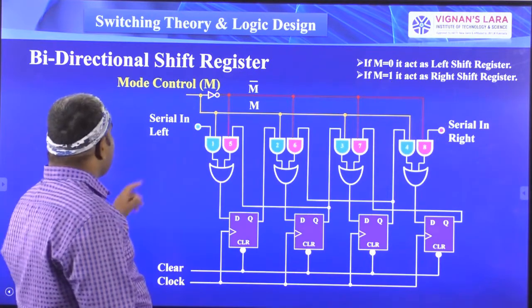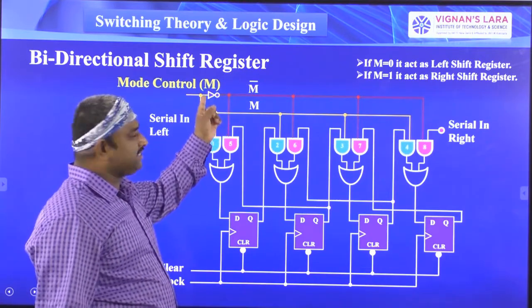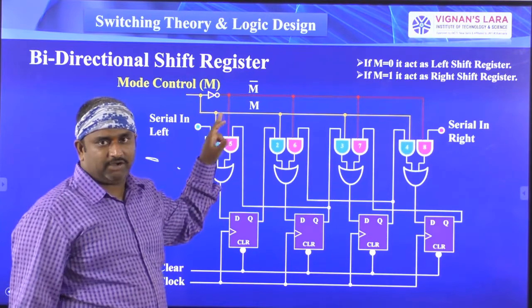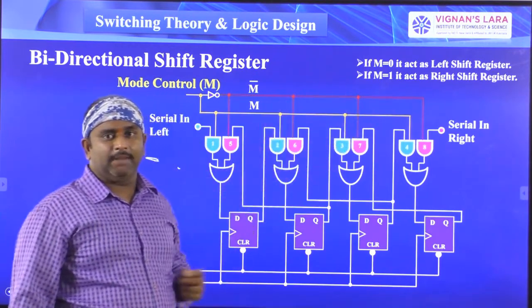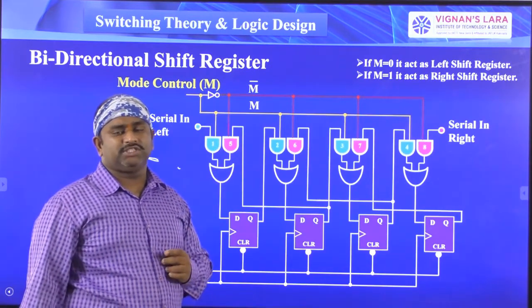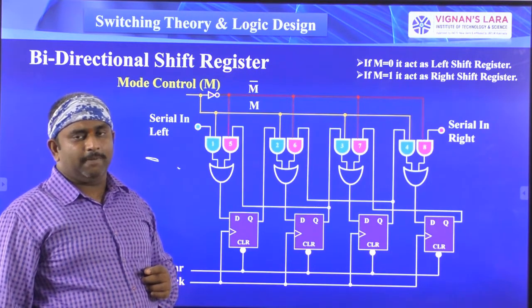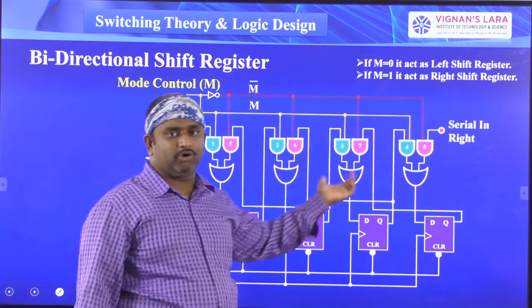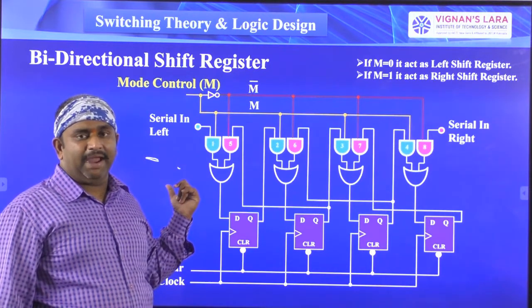The mode control signal M is represented by capital M and is connected to a NOT gate. We represent two colors: the yellow color line represents M, and the red color line represents M-bar. This is similar to a controlled shift register concept. We have taken four D flip-flops, making this a four-bit bidirectional shift register.